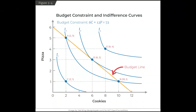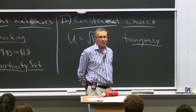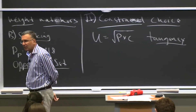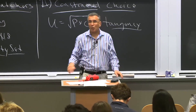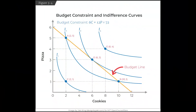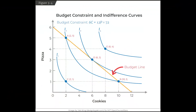Point D is the furthest-out indifference curve you can achieve while still meeting your budget constraint. Therefore, the optimum graphically is the tangency between the indifference curve and the budget constraint — the optimal constrained bundle. At that tangency, the utility is the square root of 18, and you are choosing six cookies and three pizzas. That is the best you can do given your budget.